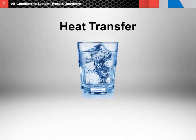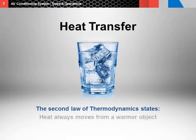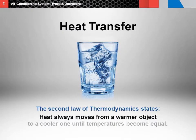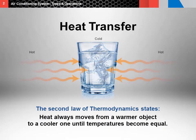First, we're going through the heat transfer function of an air conditioning system. Heat transfer is important in both the expansion valve system and the orifice tube system. The second law of thermodynamics states heat always moves in one direction, from hot to cold, until temperature becomes equal. This is the basis for the function of an air conditioning system.